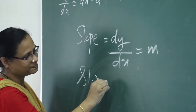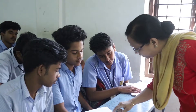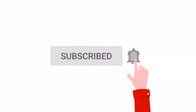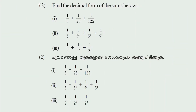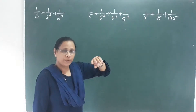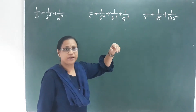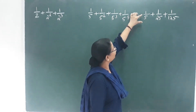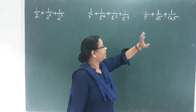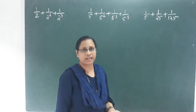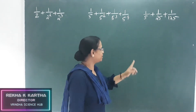Mathematics is an easy subject. The next question is to find the decimal form of the sums below. We have to add the fractions in each row, add one decimal formula, and answer the question.